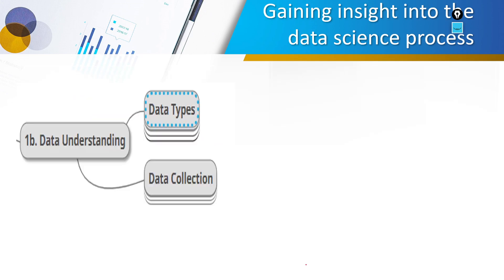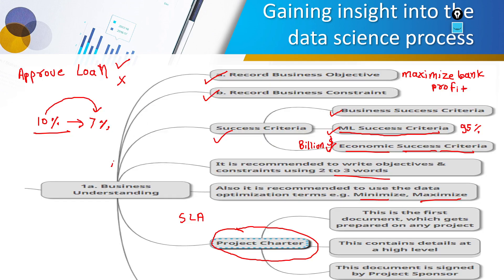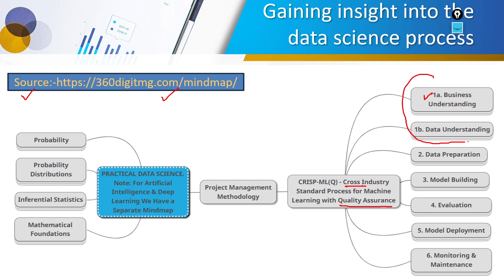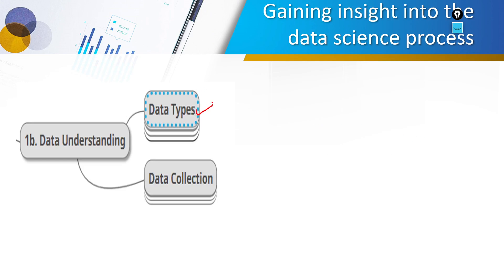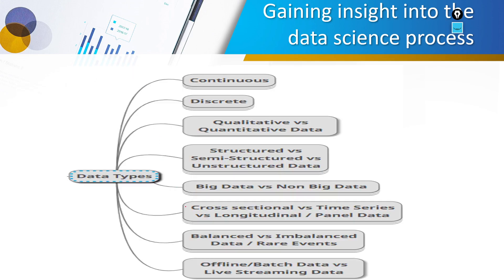Now we go to the next part: data understanding. We divide this into two parts — data types and data collection. For data types: continuous data is floating point data like temperature or interest rate; discrete data has mostly integer values. We also have qualitative and quantitative data as covered previously — quantitative has interval and ratio, qualitative has nominal and ordinal data.